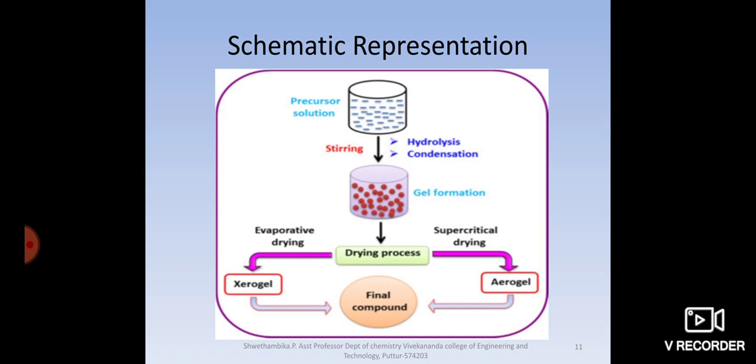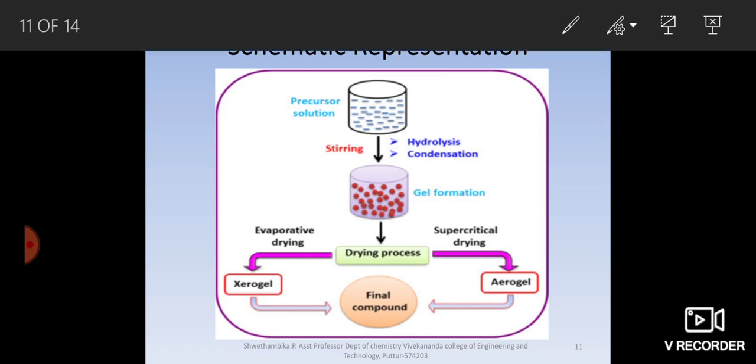Here I have given one schematic representation which might help you to remember the process. First we have to take a precursor solution, that is nothing but what we wrote as MOR. Precursor is starting material for the process. Then make it to undergo hydrolysis, reaction with water, condensation, M-OH plus MOR reaction. Then stir the medium well, we will get a gel. Then one have to go for drying.